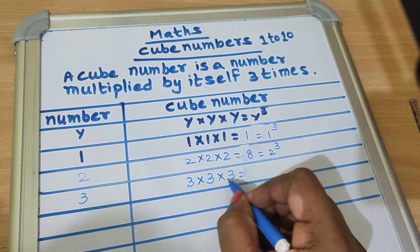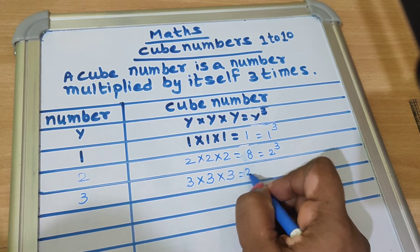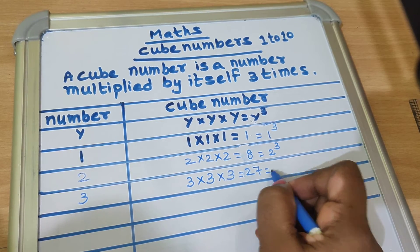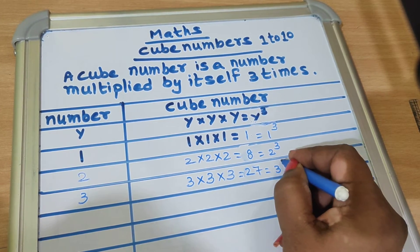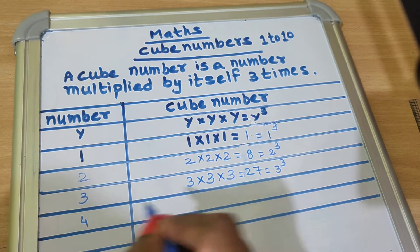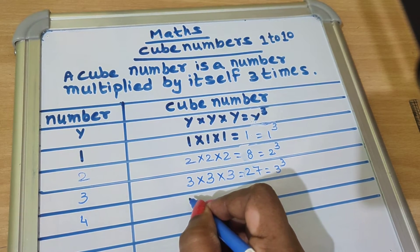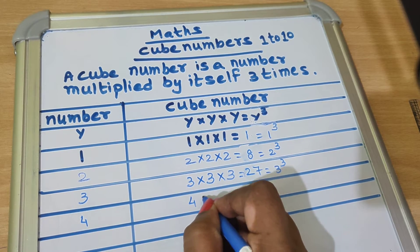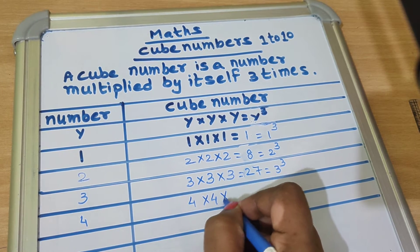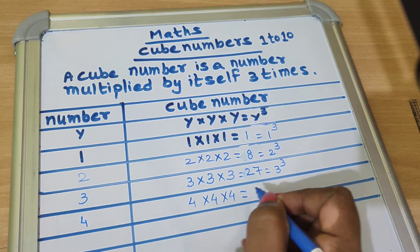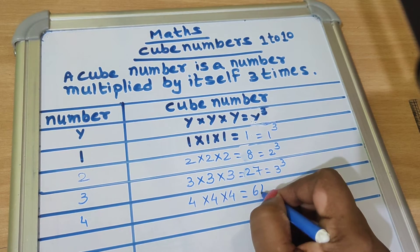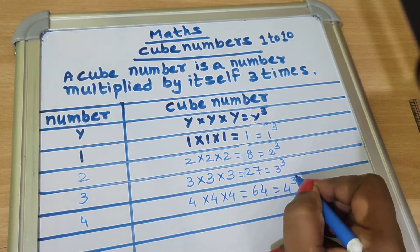3 into 3 into 3 equals 27, we write as 3 cube. 4 into 4 into 4 equals 64, we write as 4 cube.